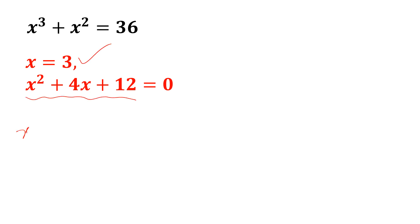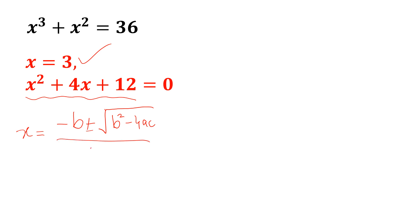So by using the quadratic formula, we can find the other two solutions. The quadratic formula is x is equal to minus b plus minus square root of b square minus 4ac divided by 2a. In this equation, a is equal to 1, b is equal to 4, and c is equal to 12.